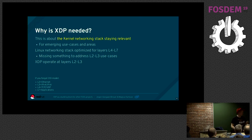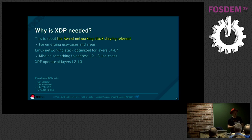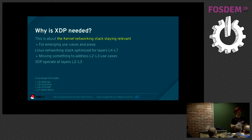Why is XDP needed? The network stack has been optimized for layer 4 to 7, and we take performance hits once packets arrive at the socket buffer, or SKB. It's named the socket buffer because when it was written 25 years ago, everything was assumed to go into a socket. But for layer 2 and layer 3 use cases, we can do things faster without those performance overheads — and that is what XDP does.